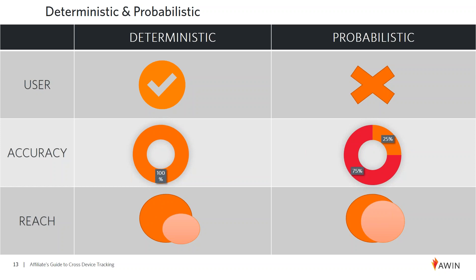We didn't think it was enough to say we think this is a sale. So even though the reach is smaller with deterministic than with probabilistic, we're much more comfortable confirming to our merchants that the right amount is being tracked and that the sale really was generated by an AWIN publisher. No guessing involved — it's legitimately earned commission. Makes merchants comfortable, makes our publishers even happier.